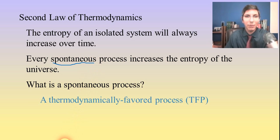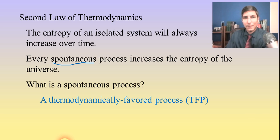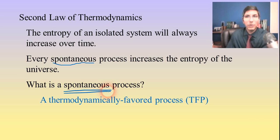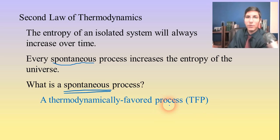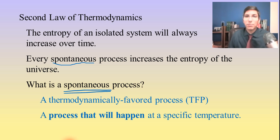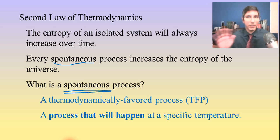What is a spontaneous process? In chemistry, we often call it a thermodynamically favored process. Years ago, the word spontaneous was found quite copiously in AP Chemistry and general chemistry textbooks. We don't use that quite as much today — we often refer to it as a thermodynamically favored process because sometimes people confuse it with spontaneous combustion and other things. So we say thermodynamically favored process, or TFP. It's a process that's going to happen at a specific temperature. If a process will happen, we call it a TFP. If it doesn't happen, it's not a TFP.